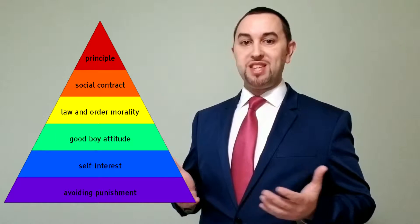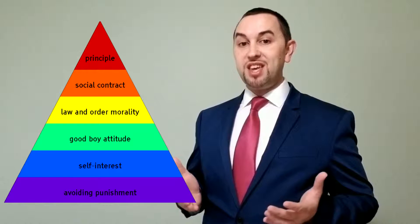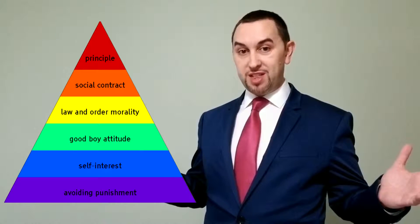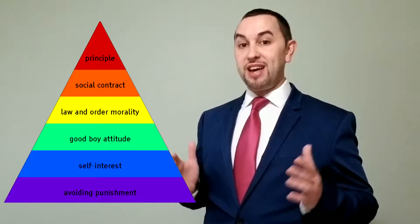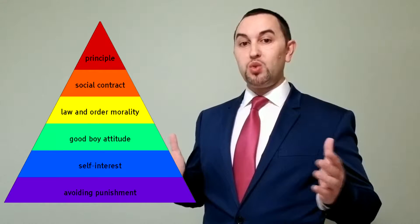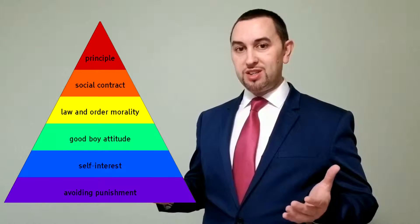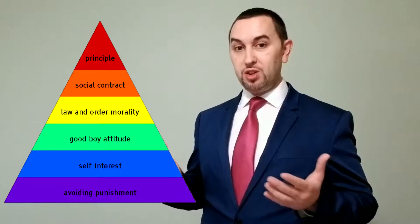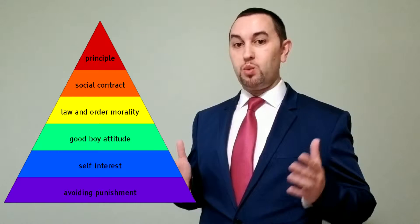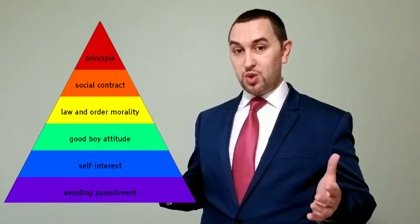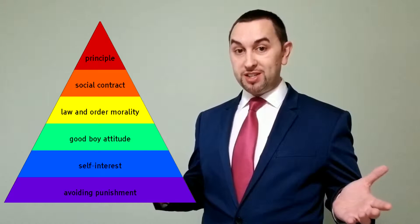Stage four is about maintaining the social order. At this stage, you have a wider perspective on things. You become aware of society as a whole. You realize that laws are needed for society to work, so you follow the rules and obey the law. This is more advanced because now you're thinking more about why things are wrong. If everyone breaks the law, society would fall apart.